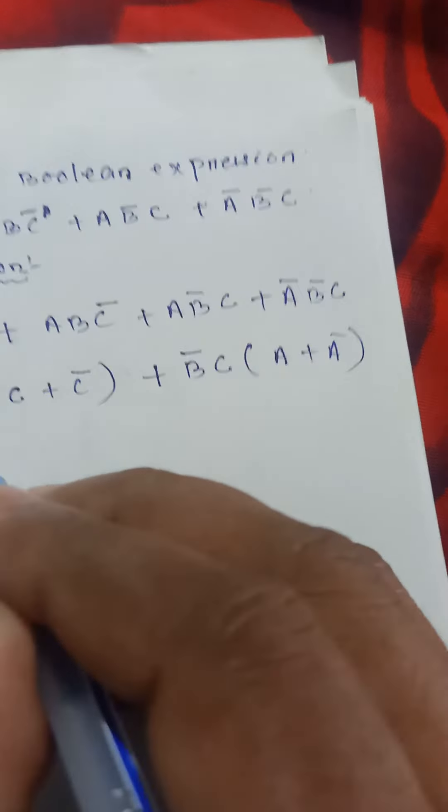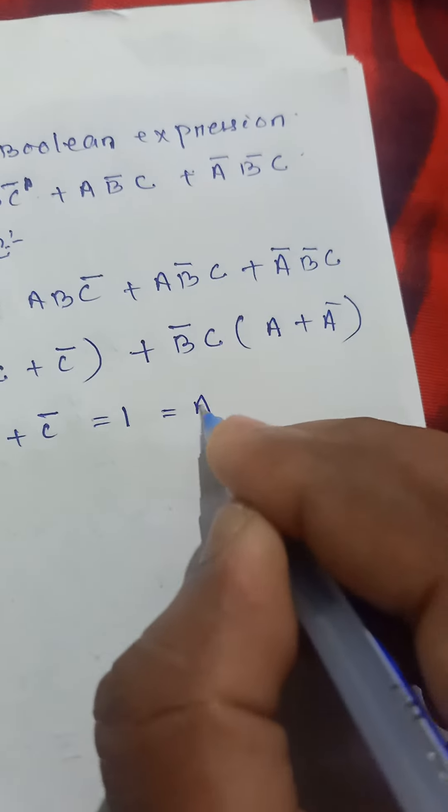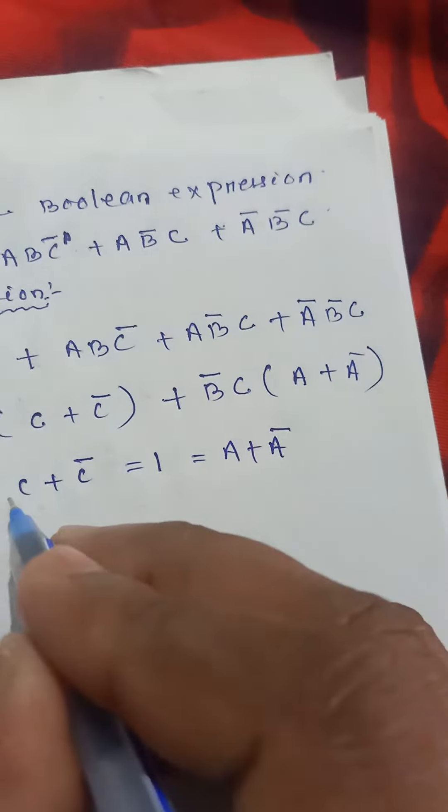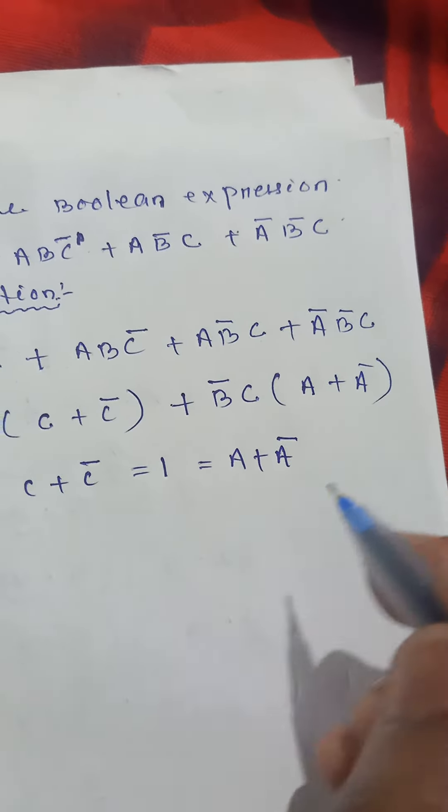C plus C bar is equal to 1, equal to A plus A bar. C plus C bar equals 1 and A plus A bar equals 1.